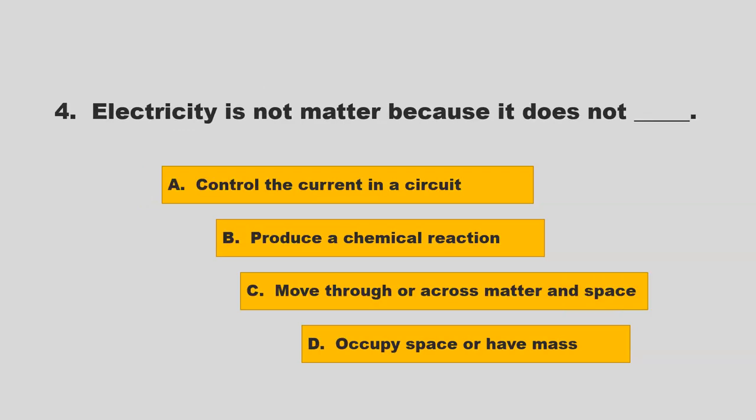Electricity is not matter because it does not blank. Is it control the current in a circuit, produce a chemical reaction, move through or across matter in space, occupy space, or have mass? If you chose D, occupy space or have mass, you are correct.